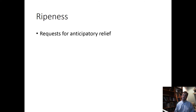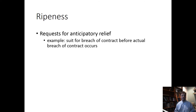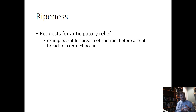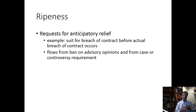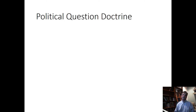We then talked about ripeness. Ripeness really relates to requests for anticipatory relief where the case or controversy has not matured yet and is really not ready to be heard. As an example, we gave a suit for breach of contract before there's an actual breach. The ripeness doctrine — and really all these other doctrines — flow from this basic ban on advisory opinions and from the case or controversy requirement.